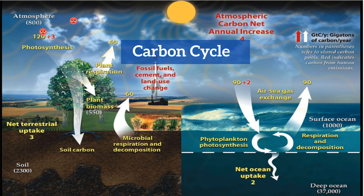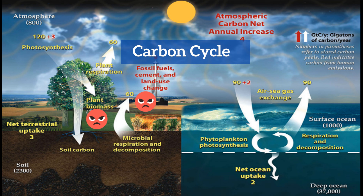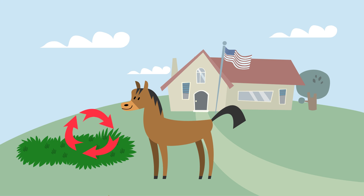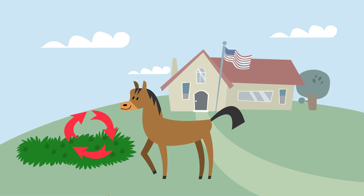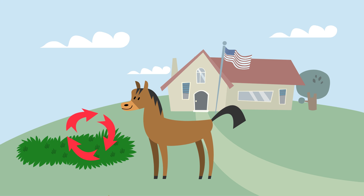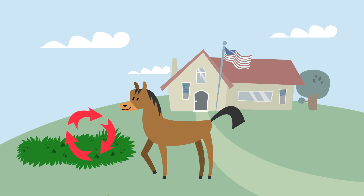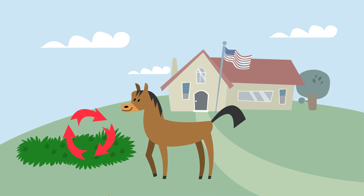The terrestrial biosphere, which is another term for the earth's land, has several paths for carbon. First, there is an exchange between plants and animals. Plants absorb carbon for photosynthesis, and animals release carbon during cellular respiration.